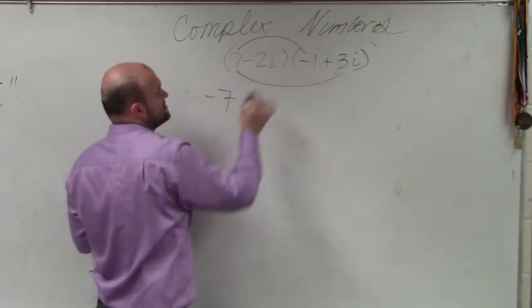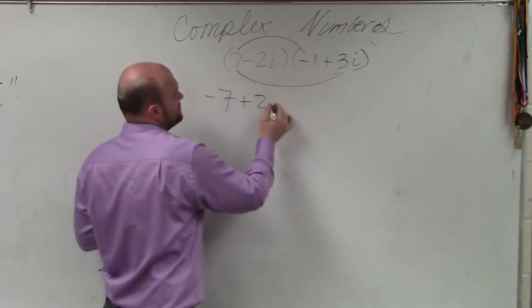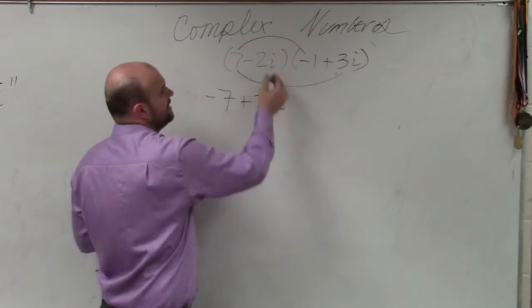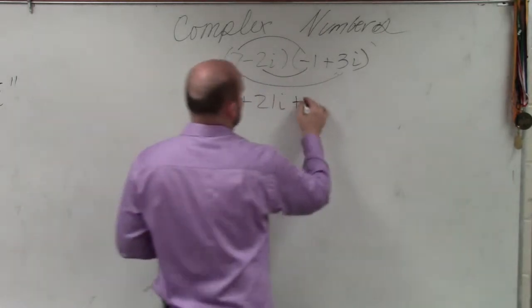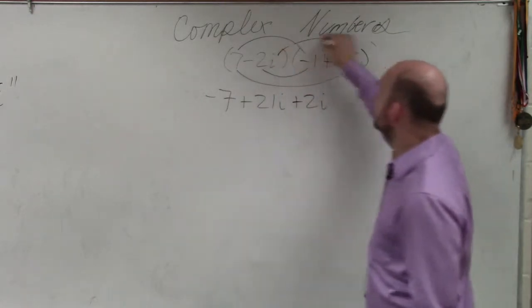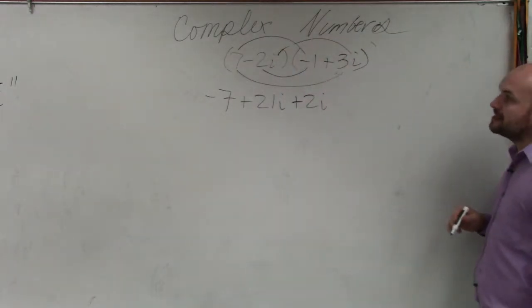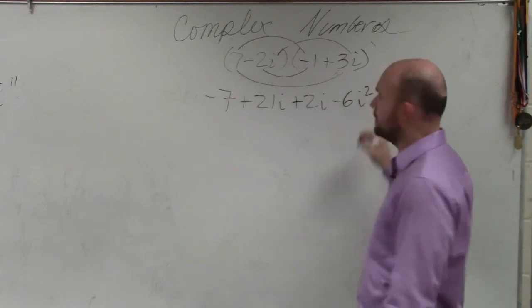Outer terms, 7 times 3i is positive 21i. Inner terms, negative 2i times negative 1 is positive 2i. And then the last terms, negative 2i times 3i gives you negative 6i squared.